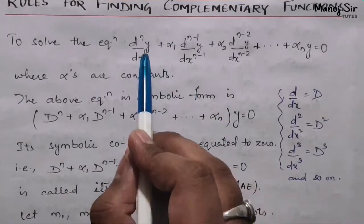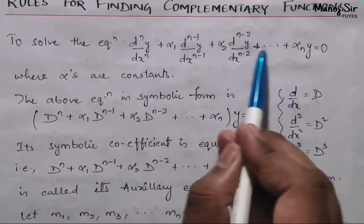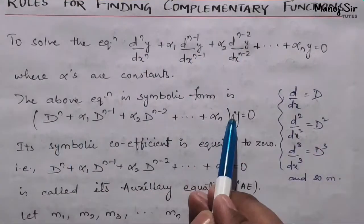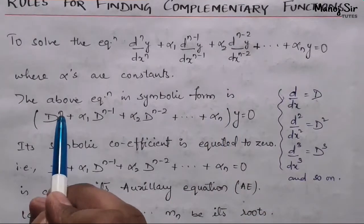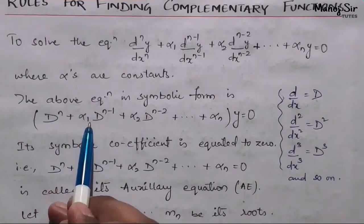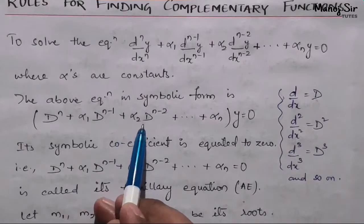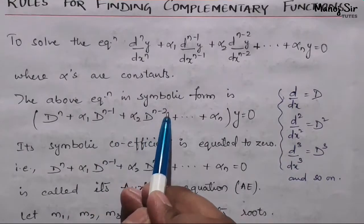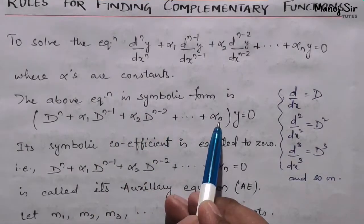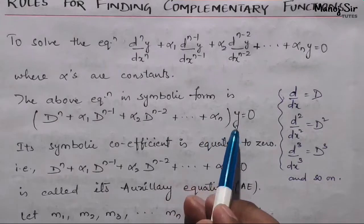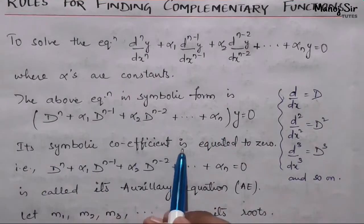Since y is common in every term, we take y as common, so this becomes: D^n plus α₁·D^(n−1) plus α₂·D^(n−2) plus dot dot dot plus αₙ, all times y, equals zero.